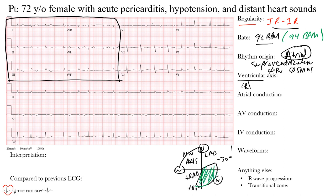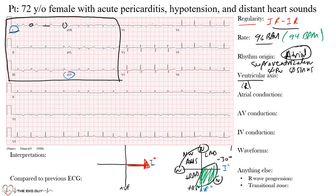To determine the axis, we focus on lead I — at zero degrees — and aVF at positive 90 degrees, both at their positive ends. Drawing our quadrant system: lead I is at zero degrees, aVF is at positive 90 degrees. Looking at lead I, the complexes are mostly positive — above the baseline — so we go toward the positive end of lead I. Looking at aVF, those complexes are also mostly above the baseline, so we go toward the positive end of aVF as well.